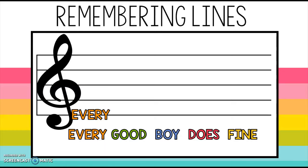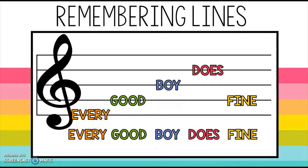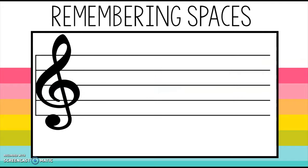Here's how we can remember the lines — just think about this sentence: Every Good Boy Does Fine. When you place it on the staff, it begins to make sense. Every begins with the letter E, and that line is E. The next line is G, then B, D, F — E, G, B, D, F. Every Good Boy Does Fine.